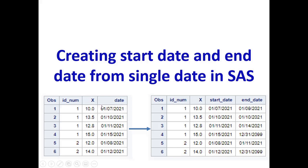This date is a start date and this value stays until the next start date for the next x value. In observation 1, the value is 13.5 and the date is 01/10/2021, which means the value x=10 is valid until 01/09/2021. I want to convert this date into a start date, and the end date should be one minus the next date, as you can see in the results here.